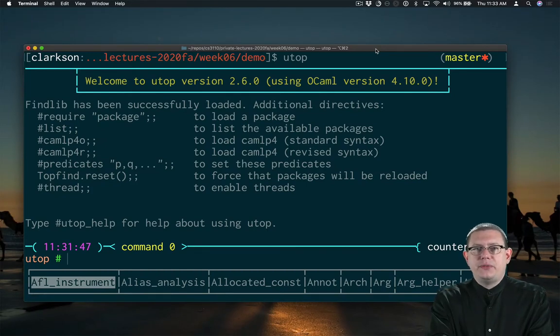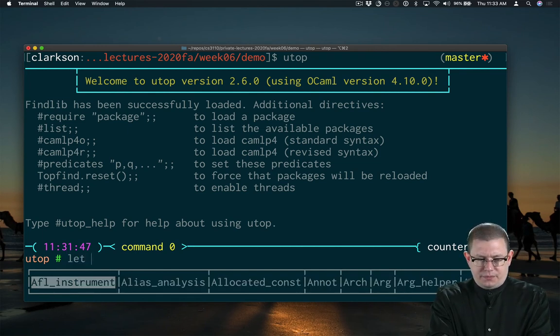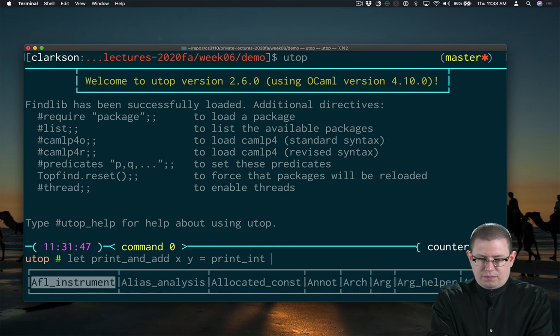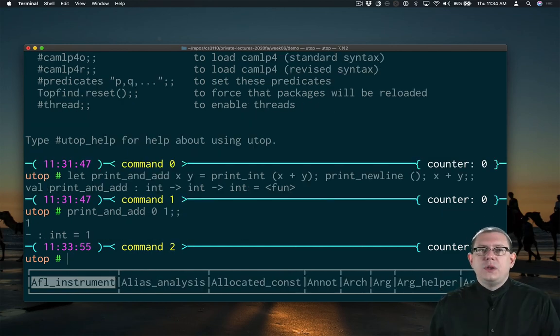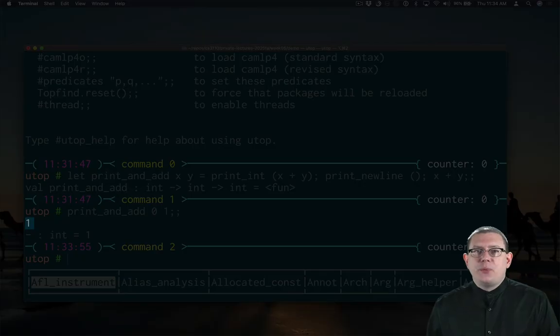Let's take a look at an example of semicolon. Suppose I wanted to write maybe a little bit of a strange function, which adds two integers together and prints the result as well. You can see the type of print_and_add is int arrow int arrow int. This function takes in two integers and then returns an integer. It also happens to have side effects. It prints the sum of the two integers. You can see that I got a one as output there that was printed.